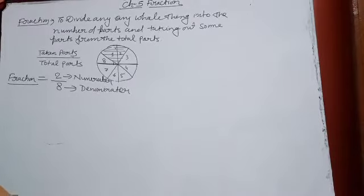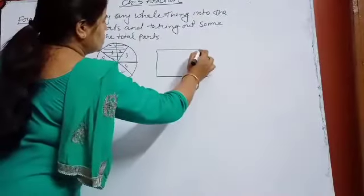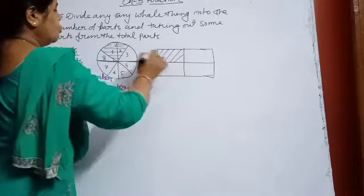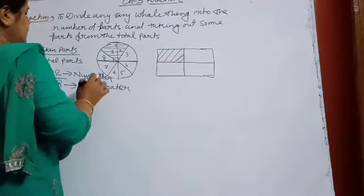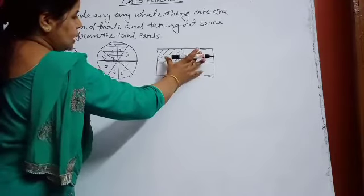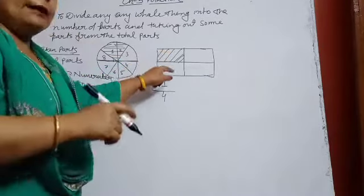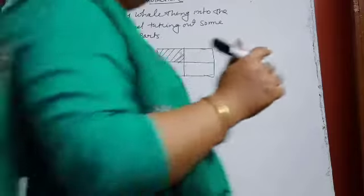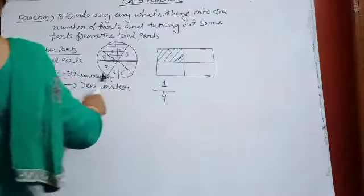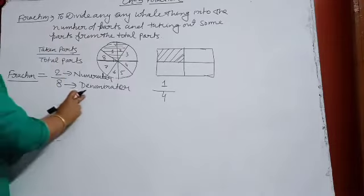Now, suppose you have a square box or rectangular box and you are dividing it into 4 parts, and out of that one part I have taken. So what will be the fraction? Taken part is 1 and the whole rectangle is divided into 4 parts, so it will be 1 upon 4. That is, 1 upon 4th part of the whole thing I have taken.